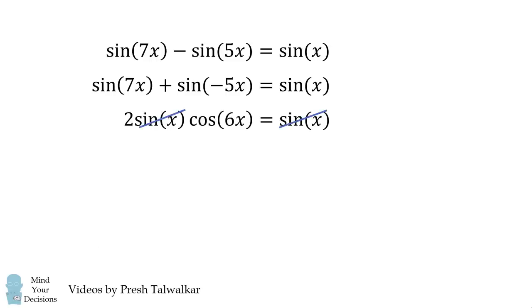From here, we can cancel out the sine X terms, and we get 2 multiplied by cosine of 6X is equal to 1. This means cosine of 6X is equal to 1 over 2. Since we want X to be an angle in a triangle, we want to limit to values of X between 0 and 180 degrees. Therefore, we can solve that 6X is equal to 60 degrees, and therefore, X is equal to 10 degrees.